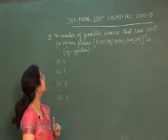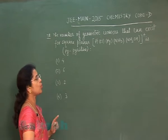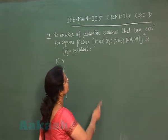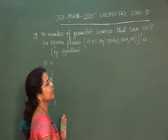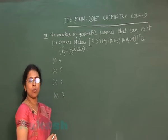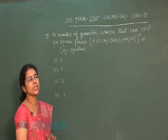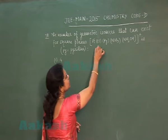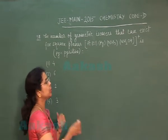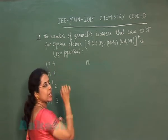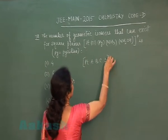Question number 78: The number of geometric isomers that can exist for a square planar complex — the formula given is [Pt(Cl)(Py)(NH₃)(NH₂OH)]⁺, where Pt is platinum, Cl is chlorine, Py is pyridine, NH₃ is ammonia, and NH₂OH is hydroxylamine. In this complex, the central metal atom platinum is attached to 4 different ligands.